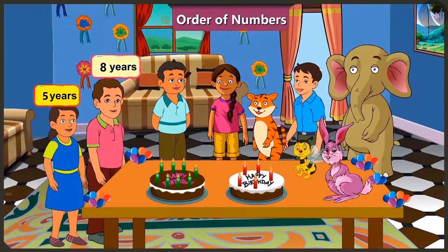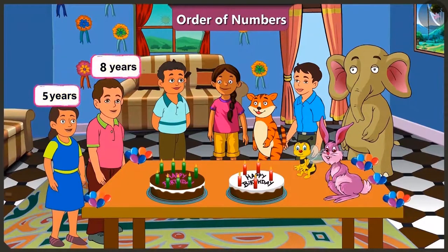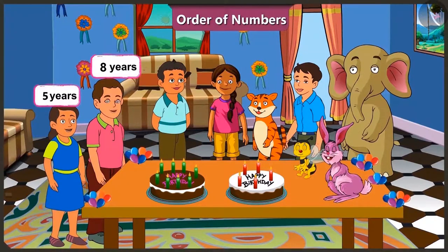2, 3, 4, 5 candles. And we can see 3 more candles in Bunty's cake. That means the number of candles in Bubbly's cake is lesser than the number of candles in Bunty's cake. Bunty has 3 more candles.